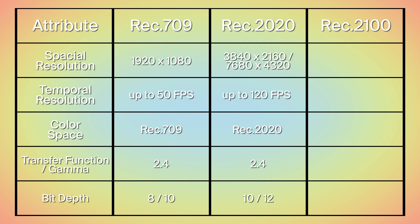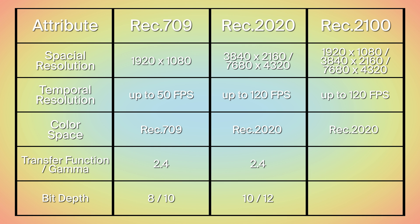Rec.2100 defines three resolutions: 1920 by 1080, 3840 by 2160, and 7680 by 4320, with square pixels giving an aspect ratio of 16 by 9. It also supports frame rates of up to 120 frames per second and defines two bit depths of 10 or 12 bits. Where Rec.2100 differs is its definition of two HDR transfer functions: the PQ curve and Hybrid Log-Gamma, or HLG.